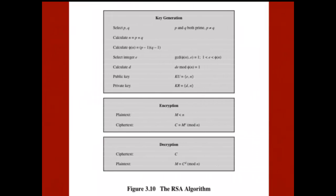The two most widely used public key algorithms are RSA and Diffie-Hellman. RSA was published in 1978 and has become the most widely accepted and implemented approach for public key encryption. It is a block cipher where plaintext and ciphertext are treated as integers — converted and then processed through mathematical formulas. The algorithm deals with prime numbers as part of its operation.